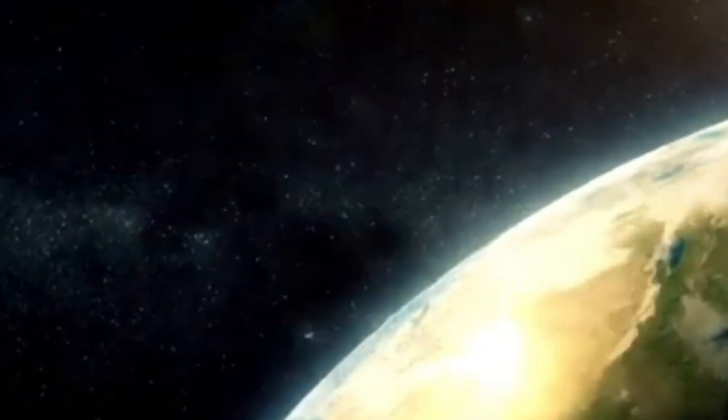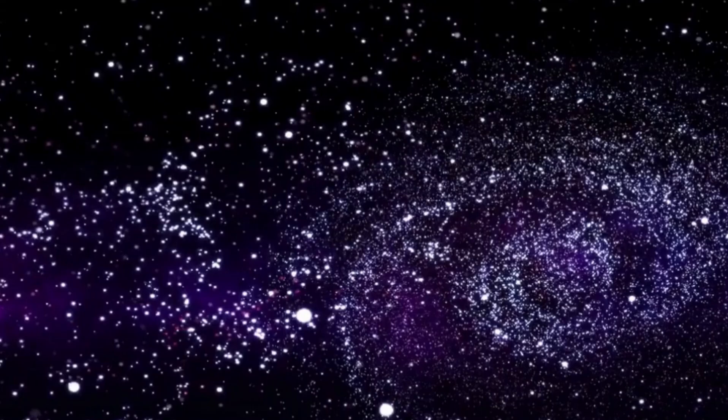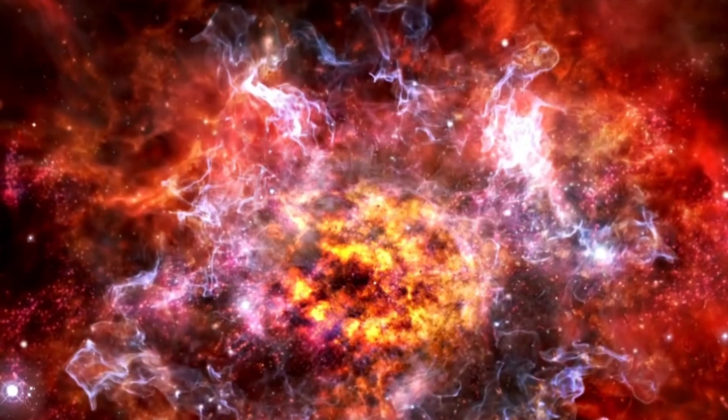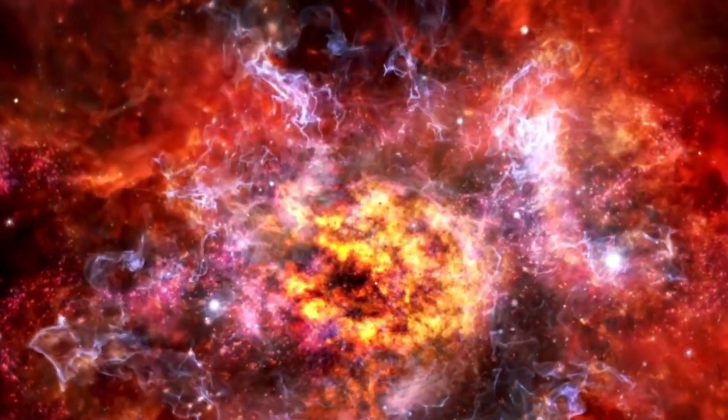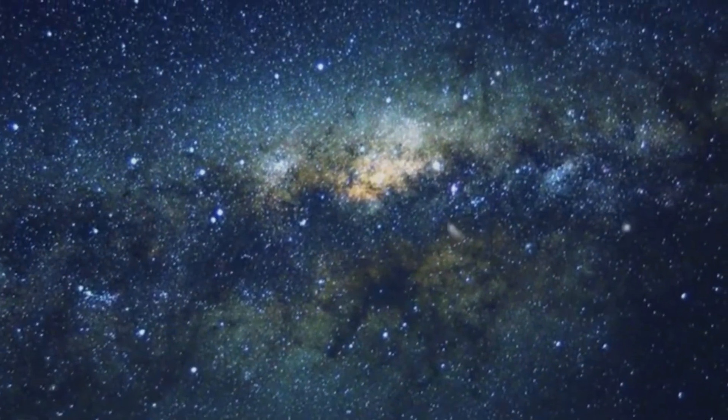This celestial entity, intriguing and potentially shocking, goes by the name of Betelgeuse, a red giant star nestled in the constellation Orion. Betelgeuse, also known as Alpha Orionis, is a red supergiant star, and its sheer size is mind-boggling.